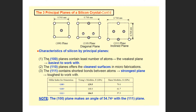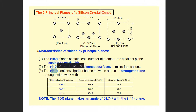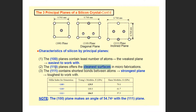If we have the (1,0,0) plane, it contains the least number of atoms, which makes it the weakest plane and therefore the easiest to work with. The (1,1,1) plane is the strongest plane, making it the toughest to work with. The (1,0,0) plane is easiest for microfabrication.